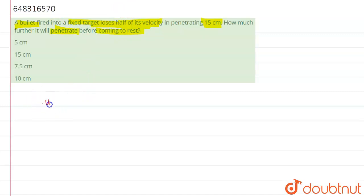We have to find the answer in centimeters. Let's suppose the initial velocity of the bullet was u, and the final velocity of the bullet was v, which is u by 2. Also we have to find the deacceleration of the bullet, and the distance s is given as 15 centimeters.